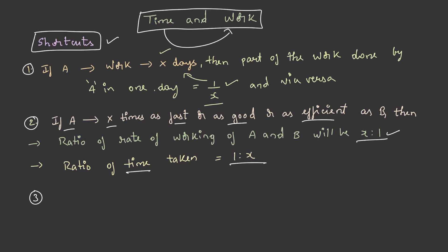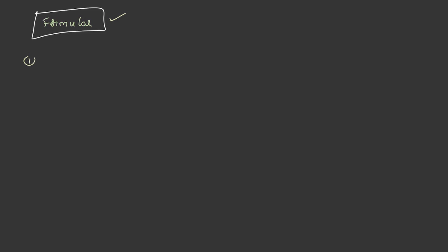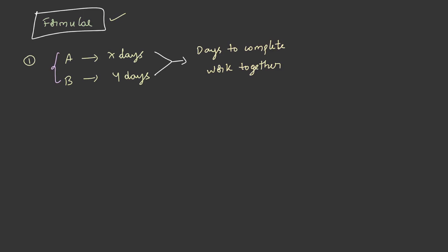How can we obtain the remaining work to be done? By subtracting the part of work done from the total work. Now let's understand a couple of formulae. If A finishes a work in x days and B finishes a work in y days, and these two work together, the number of days to complete the work is given by the formula xy / (x + y).